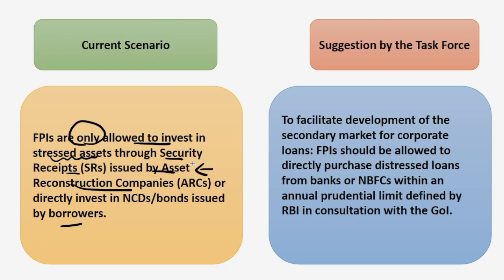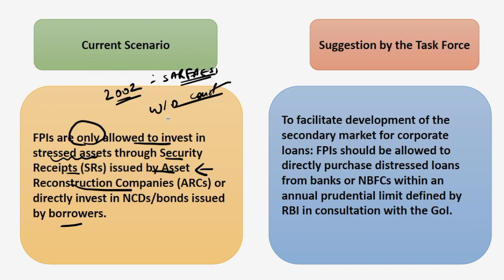We know that banks give loans to people and if they default in making the repayments or the interest payments, then after 90 days they are classified as NPAs. NPAs gave a lot of trouble to banks in the way that banks could not sell the pledged asset to recover their money without court orders. So in 2002, the SARFAESI Act was introduced where banks were authorized to recover money by selling the pledged asset without any court order. ARC is a financial institution that buys the NPAs or bad assets from banks and financial institutions so that banks can clean up their balance sheets.